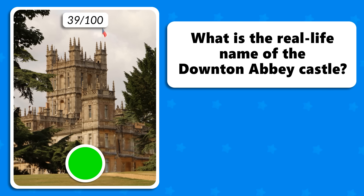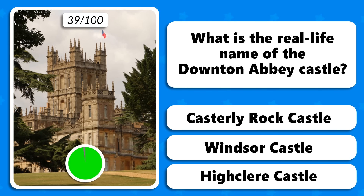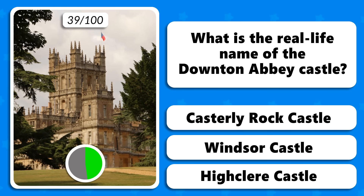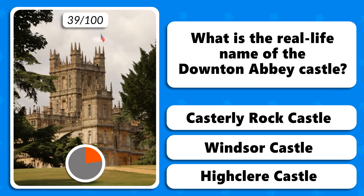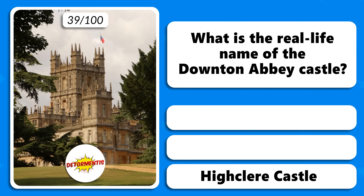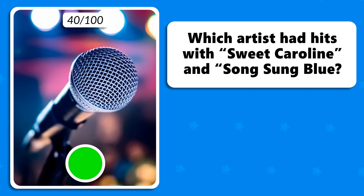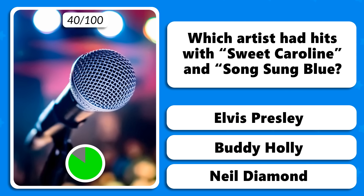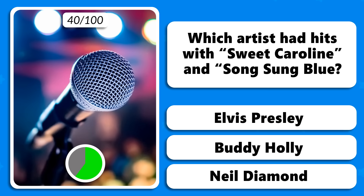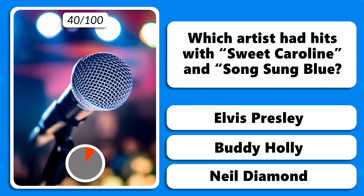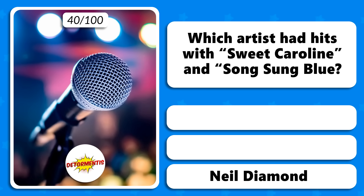What is the real-life name of the Downton Abbey Castle — Casterly Rock, Windsor or Highclere? It is called Highclere Castle. Which artist had hits with Sweet Caroline and Song Song Blue — Elvis Presley, Buddy Holly or Neil Diamond? Neil Diamond.